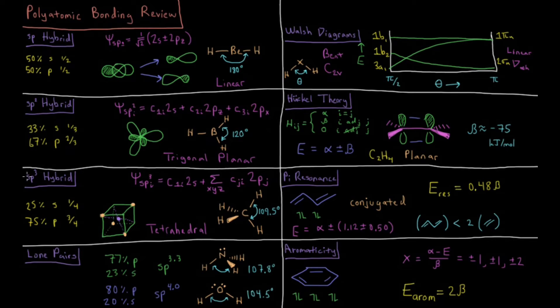Finally we have the sp3 hybrid, useful for things like methane, where you have a tetrahedral structure and 109.5 degree bond angles. You can draw methane in terms of the vertices of a cube, and every hydrogen atom is at an opposite vertex in the cube, giving you the correct tetrahedral angles.